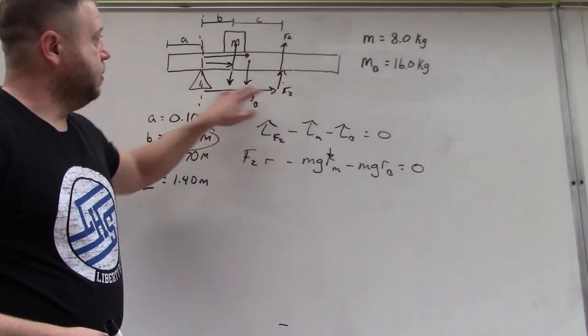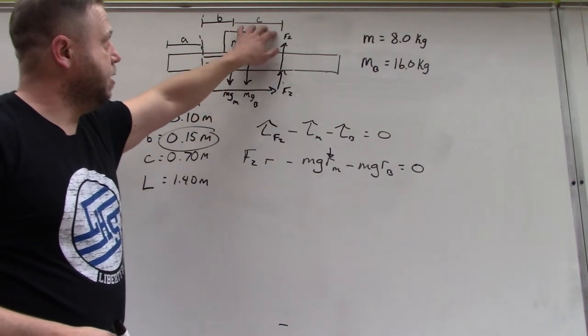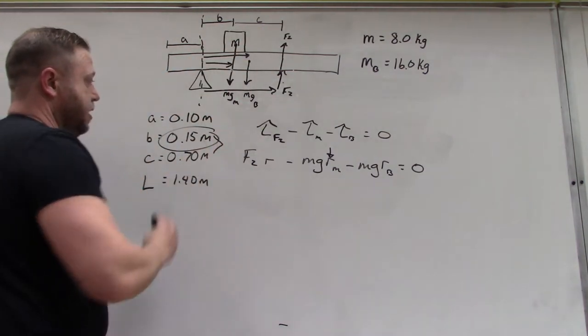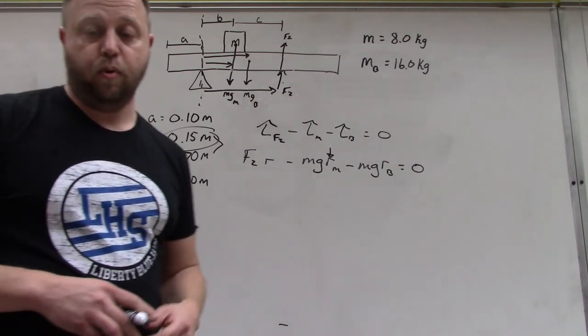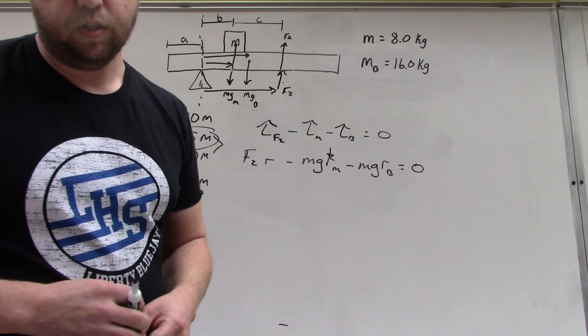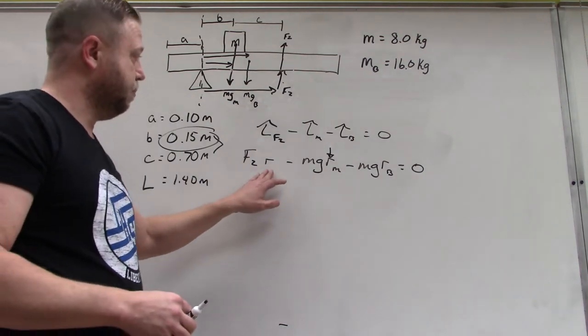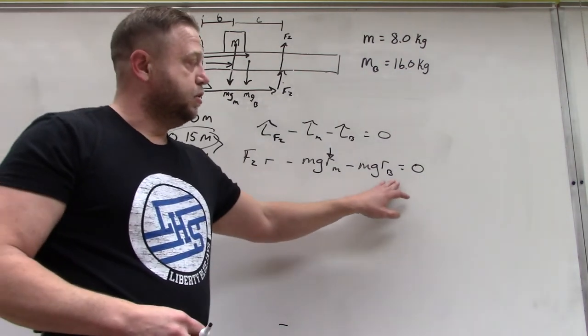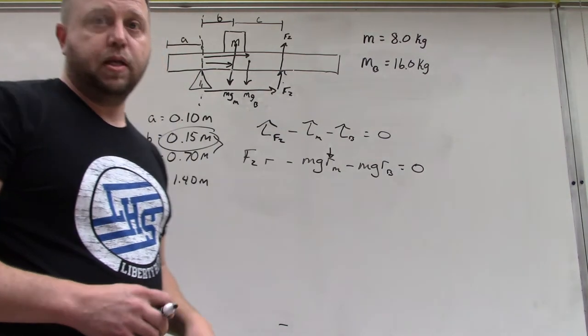This distance from here to here is the sum of b and c, so I can just add these together. That's easy, that's going to be 0.85. That'll give us the radius for F2. The radius of the beam tends to be the hardest one.